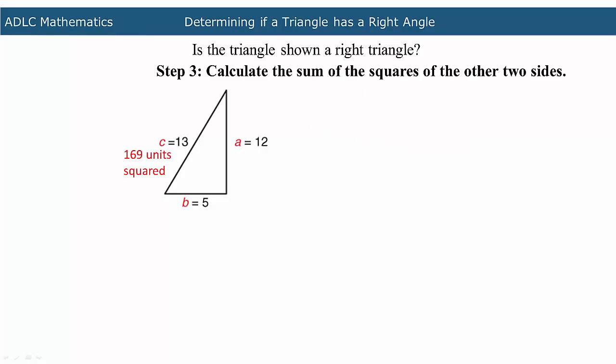Now calculate the sum of the squares of the other two sides. The other two sides, A and B, are 12 and 5.